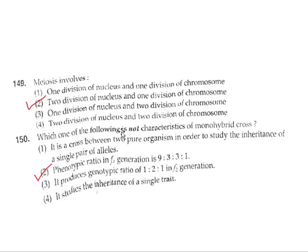Question 150: Which of the following is not a characteristic of a monohybrid cross? Option 2 — the phenotypic ratio in F1 generation is 9:3:3:1 — is not a characteristic of monohybrid cross. That ratio belongs to dihybrid cross. In monohybrid cross, the ratio is 1:1. Correct answer is option 2.